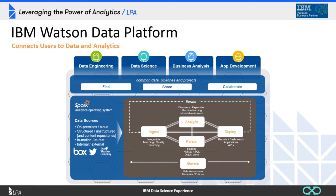Watson Data Platform is all about connecting users to data and analytics. It's based on the Spark Analytics Operating System, which is a new tool developed over the past several years as part of the Apache project. IBM supports this open source product that provides a massively parallel processing capability for performing analytics of many different varieties. That backbone provides a cloud native set of applications that work to meet the needs of several different personas involved in processing and analyzing data today.